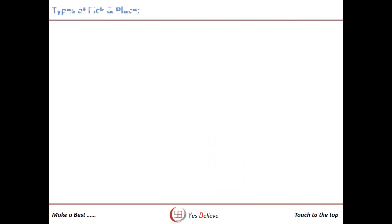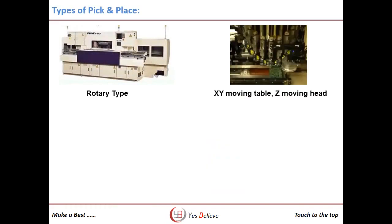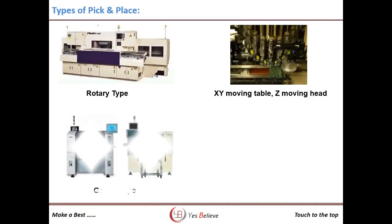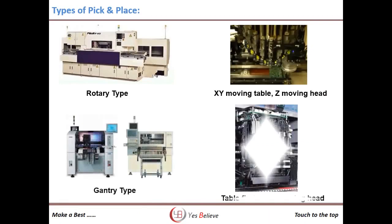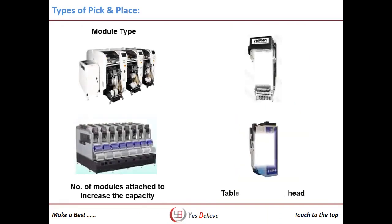There are three types of pick and place machines available in the market. The first is the rotary type; production of the rotary type pick and place machine has been stopped due to limitations of cycle time and its big size and heavy weight. The second type is the gantry machine, also called one-by-one mounting.